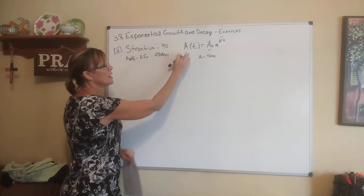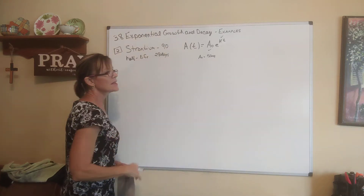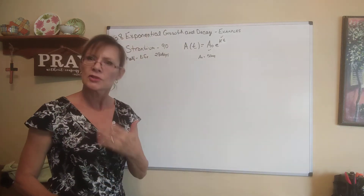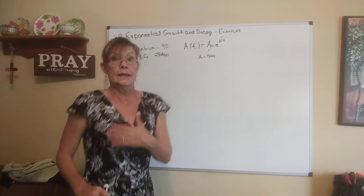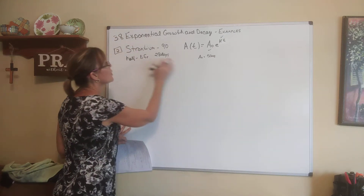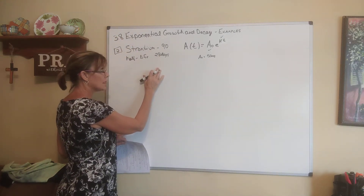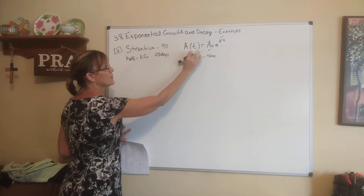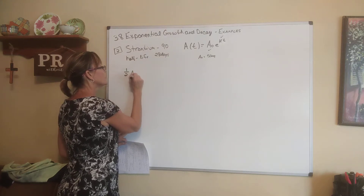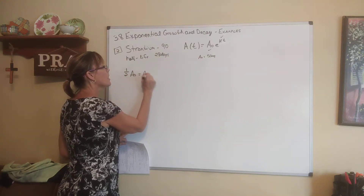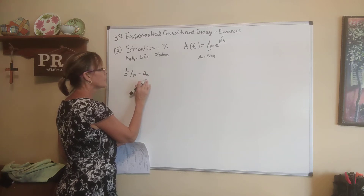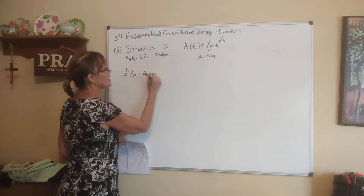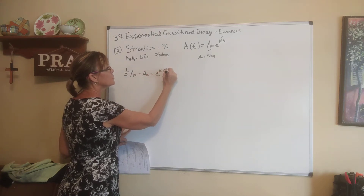In the last example I used the initial amount, but I'm not going to use the initial amount this time to show you how you can always calculate k even without it. They told me the half-life is 28 days. That means after 28 days have passed, how much is left is one-half of the initial amount. Whether this is 100 grams, 50 grams, or 30 grams — it doesn't matter. Half of that original amount will be what's left after a half-life of 28 days.